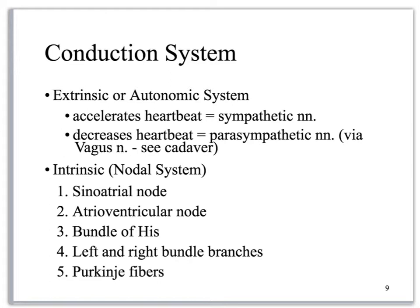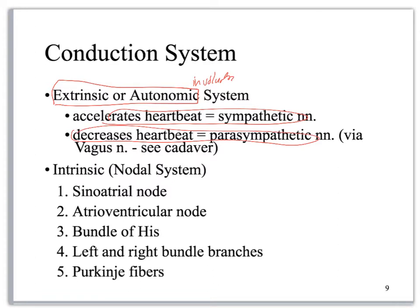That's about it for the histology, so let's look at the conduction system. You have intrinsic and extrinsic. The extrinsic is controlled by the autonomic nervous system, so it's involuntary. One side speeds it up — that's going to be sympathetic — and one side slows it down, and that's the parasympathetic, specifically the vagus nerve. You should already have it memorized that the vagus nerve's job with the heart is to slow it down.